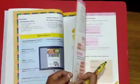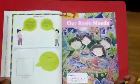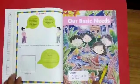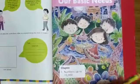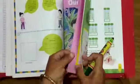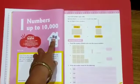This is our first chapter: Numbers up to 10,000. Before starting this, we will just take a review of your previous knowledge.